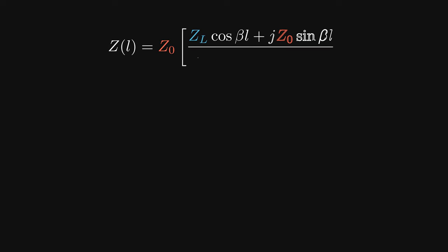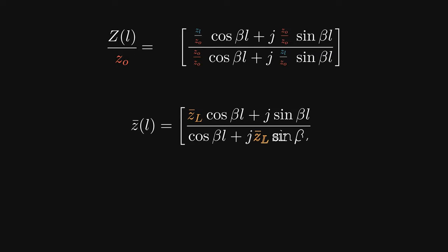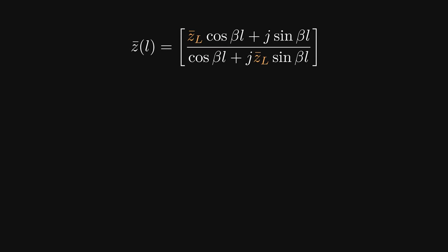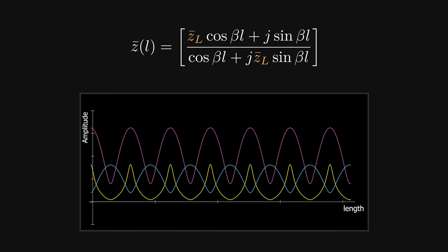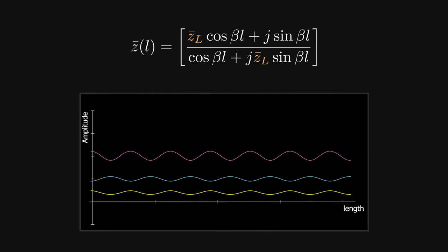Impedance transformation is very tedious to analyze mathematically. This relationship gives us the transformed impedance at any location on the line based on the load impedance, the characteristic impedance, and the length of the line from the load to the point. Most textbooks use normalized impedances instead. Normalized impedance is just the impedance divided by the characteristic impedance. The absolute load impedance doesn't have meaning by itself — what matters is the load impedance relative to the characteristic impedance, as this determines the mismatch and hence the standing wave pattern. So we always deal with normalized impedances.